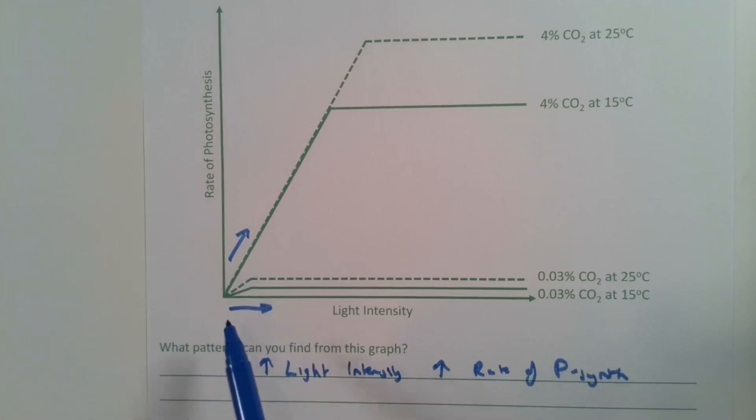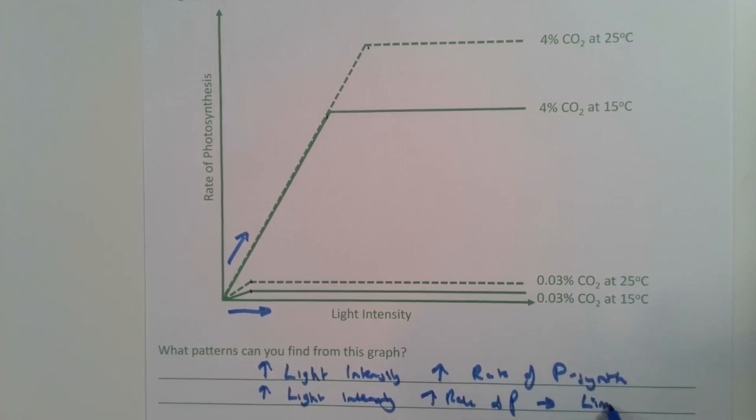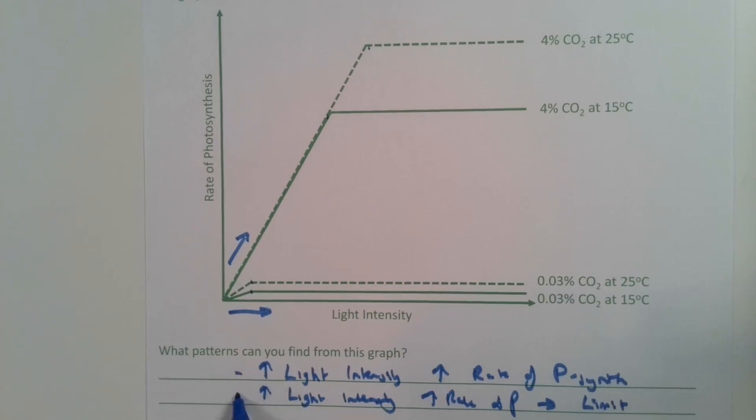However, the line does not continue to increase. At a certain point on each of the graphs, it reaches a point where it levels off. This means that as the rate of photosynthesis increases, it only does so to a limit. This would be enough to pick up two marking points.